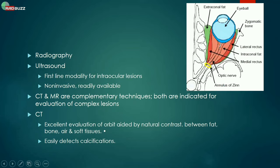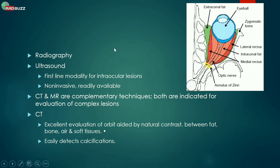This is the annulus of Zinn — just a structure we can't see on imaging, for practical purposes. The optic nerve is there. We are able to see the fat, the intraocular muscles, and the globe on imaging. We can see all of it more on CT and ultrasound rather than MRI.